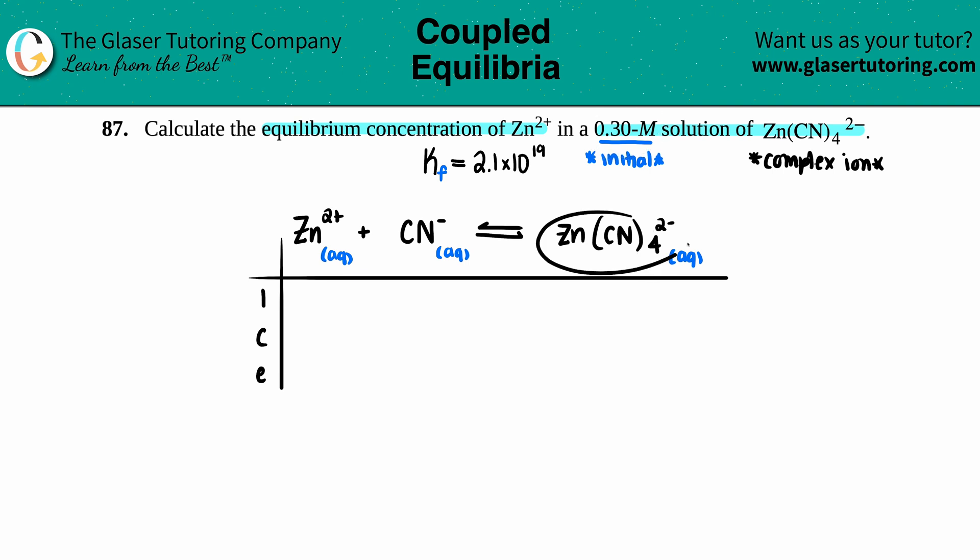For the initial row, the only thing they told us was we had 0.30 molarity of the complex ion, so my initial is 0.30. They did not state we had any initial Zn²⁺ or CN⁻, so I'm just going to say 0 and 0.